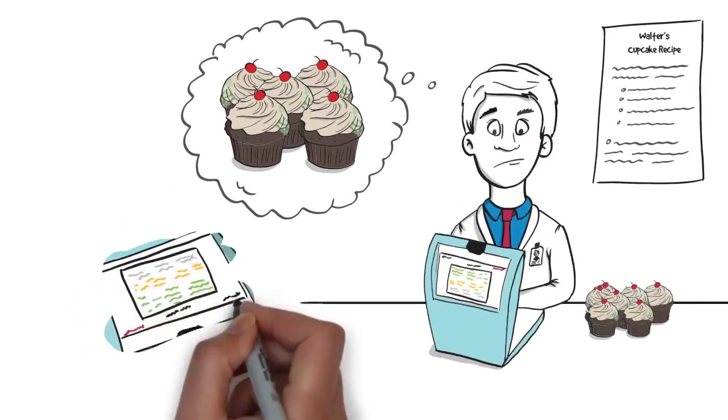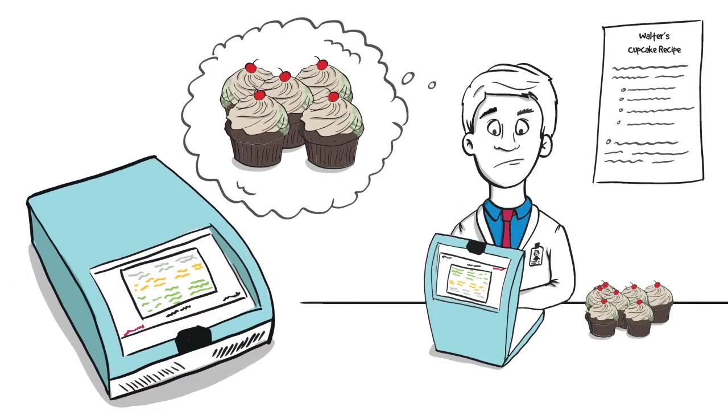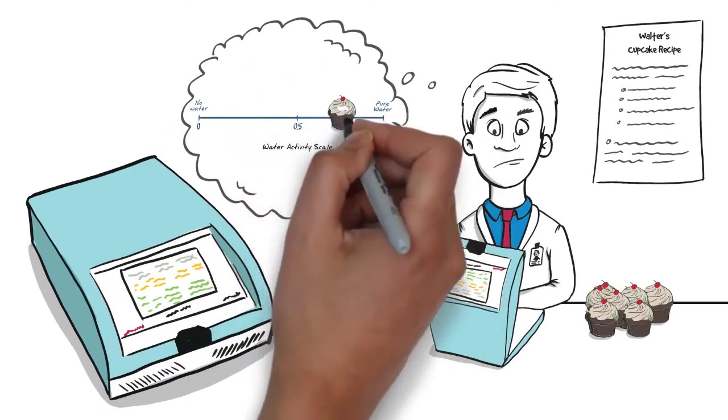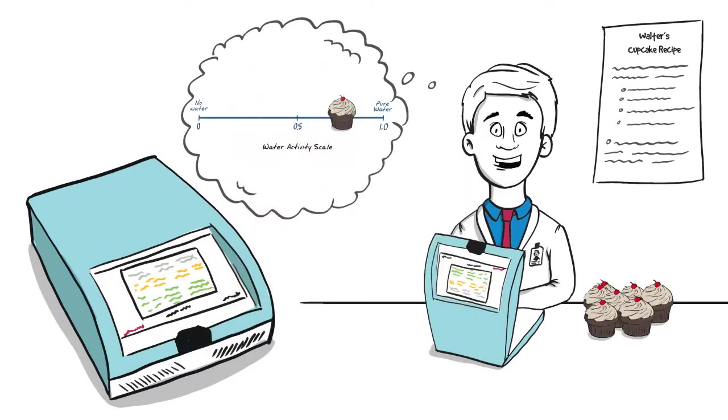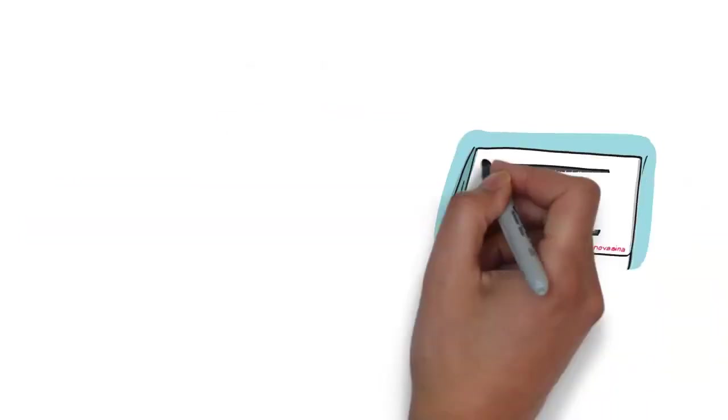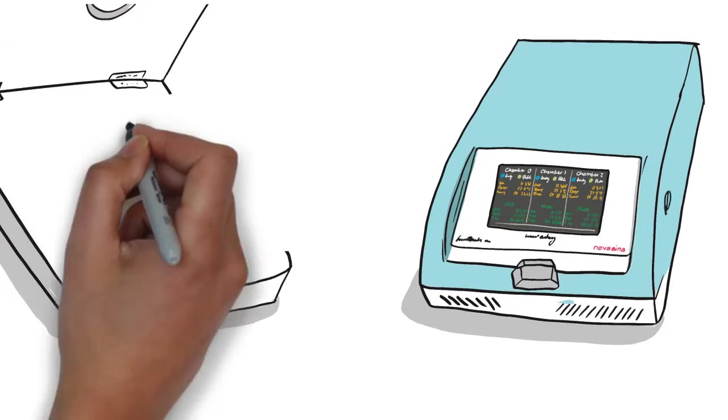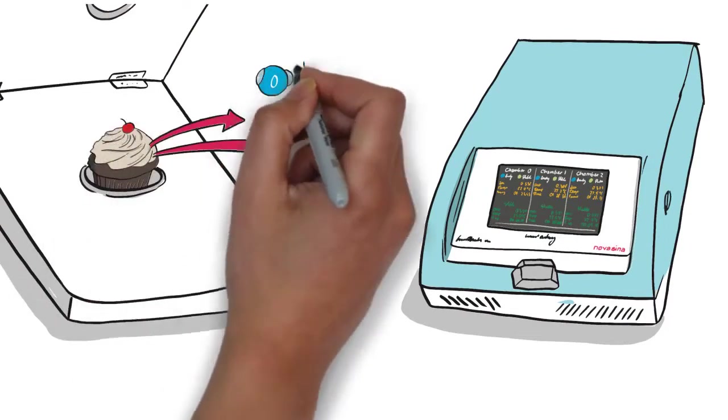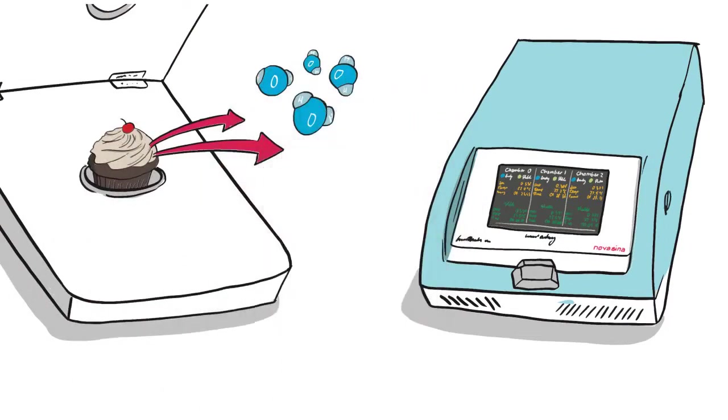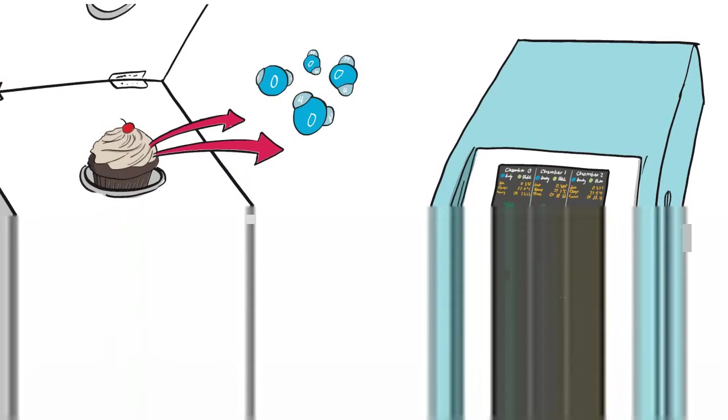If Walter had a Novasina water activity meter, he would have known that the water activity level in his cupcake is too high and he could adjust his recipe to avoid spoilage. Walter's Novasina Water Activity Meter is measuring the free water that can leave the product. It effectively detects this unbound water by measuring the water activity.